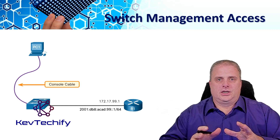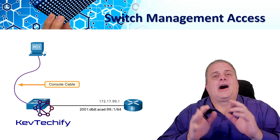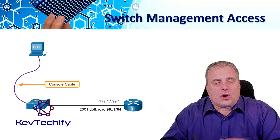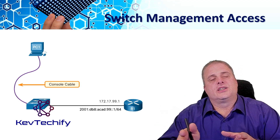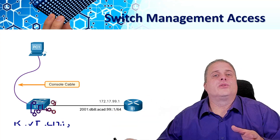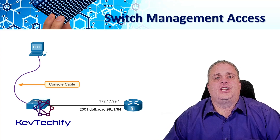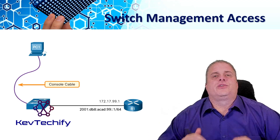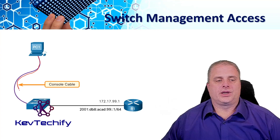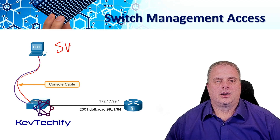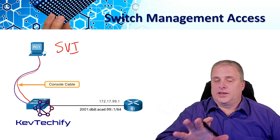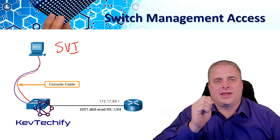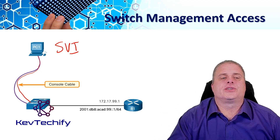To manage your switch remotely across the network — not using the console cable and out-of-band communications, but using the network where you can sit in your office — whether that switch is across the hall, across the building, or halfway around the world, you can use SSH to connect into it. What you have to do first is some initial configuration using your console cable. You have to set up what we call the SVI — the switched virtual interface. It's virtual, not physical, and on it you set up the IP address. That's how you manage your devices.